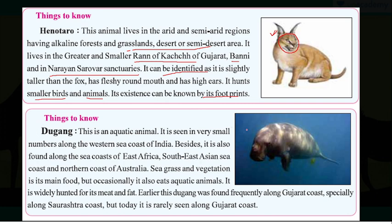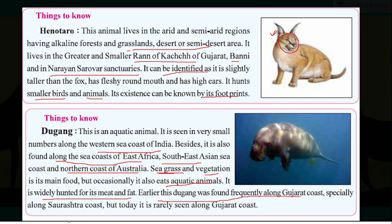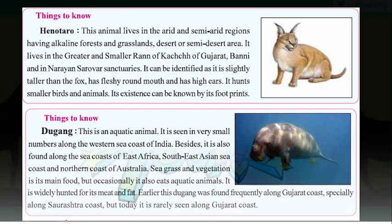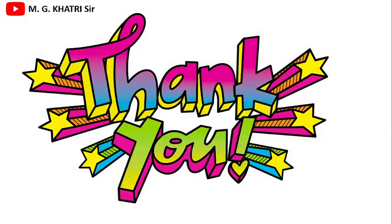The second unique animal is the Dugong — an aquatic animal found in very small numbers along the western sea coast of India. It is also found along the sea coasts of East Africa, Southeast Asia and the northern coast of Australia. It eats sea grass and vegetation, and sometimes small aquatic animals. It is widely hunted for its meat and fat, which is used to make medicines. Earlier the dugong was found frequently around the Gujarat coast, but now it is rarely found there. With this, we conclude today's session — thank you very much for watching.